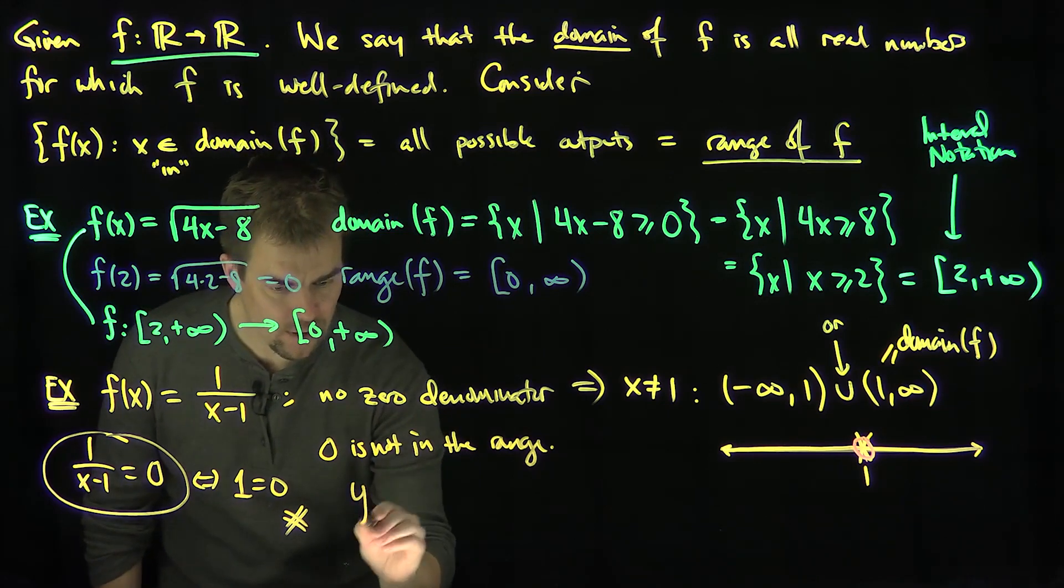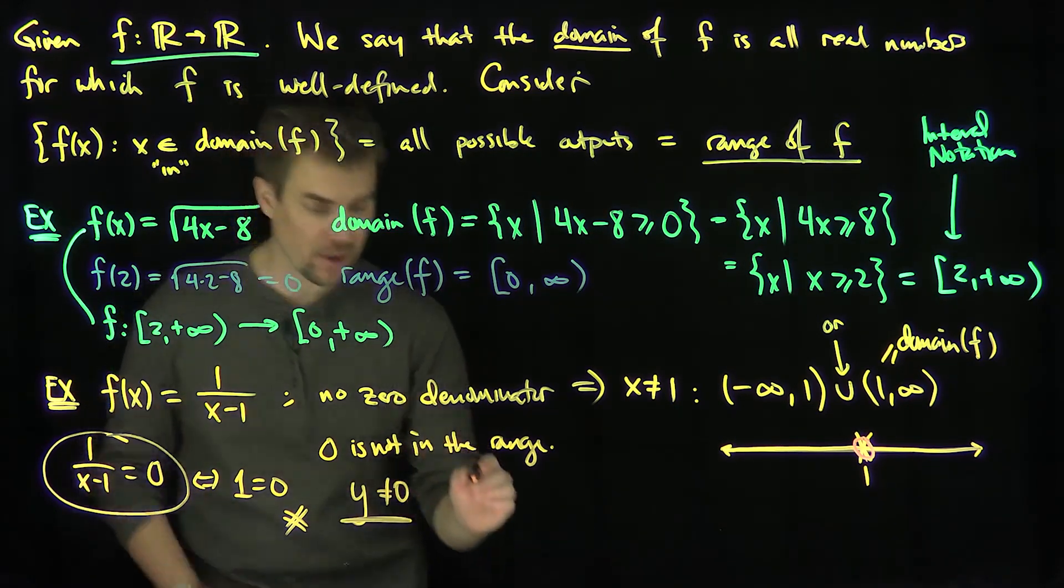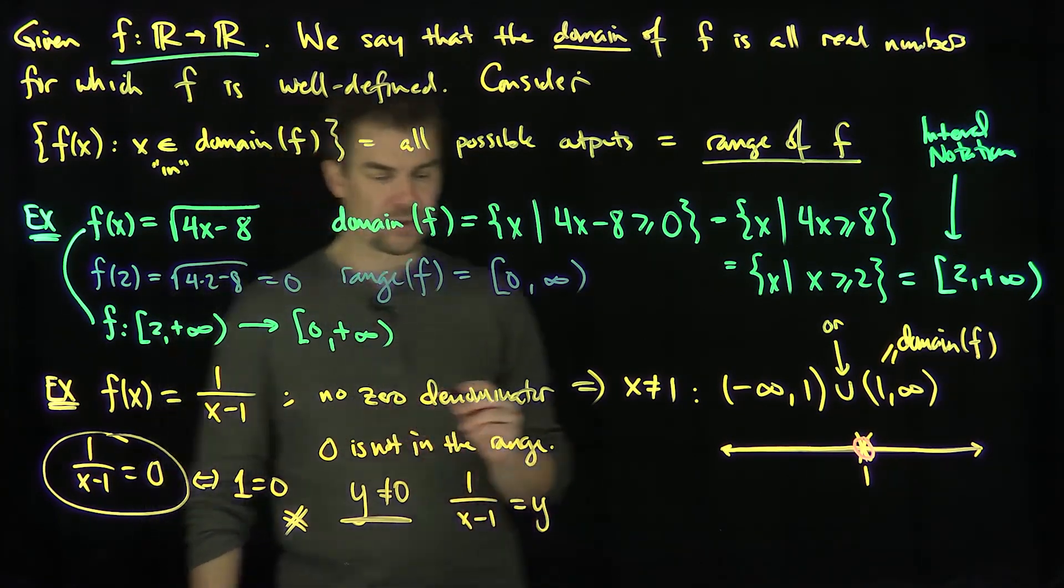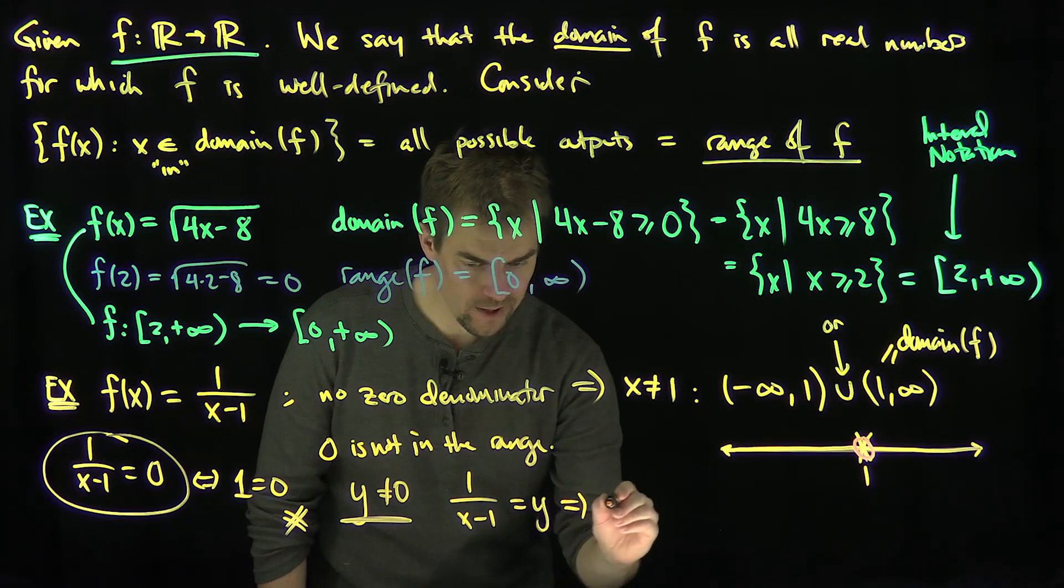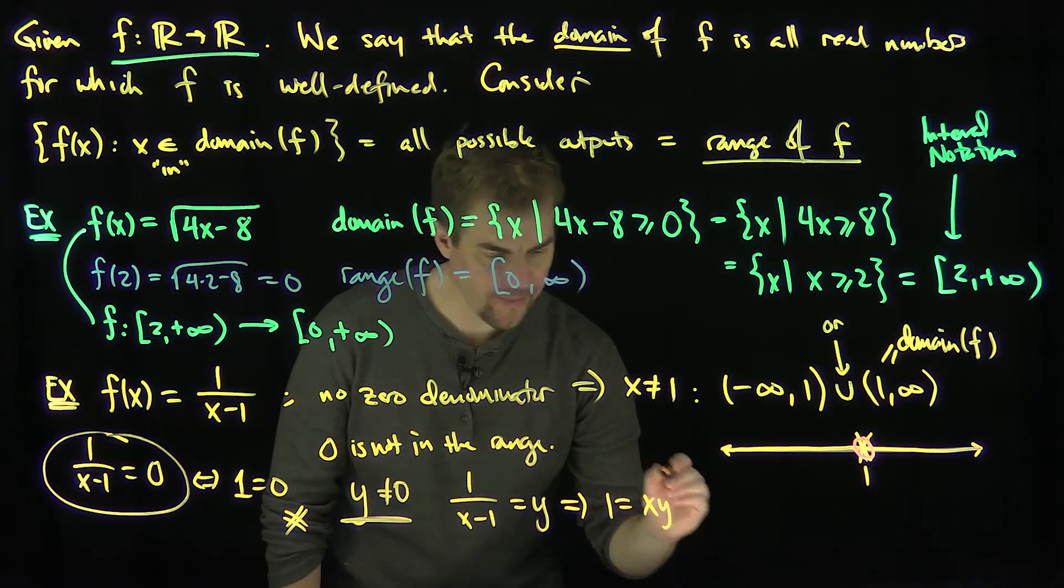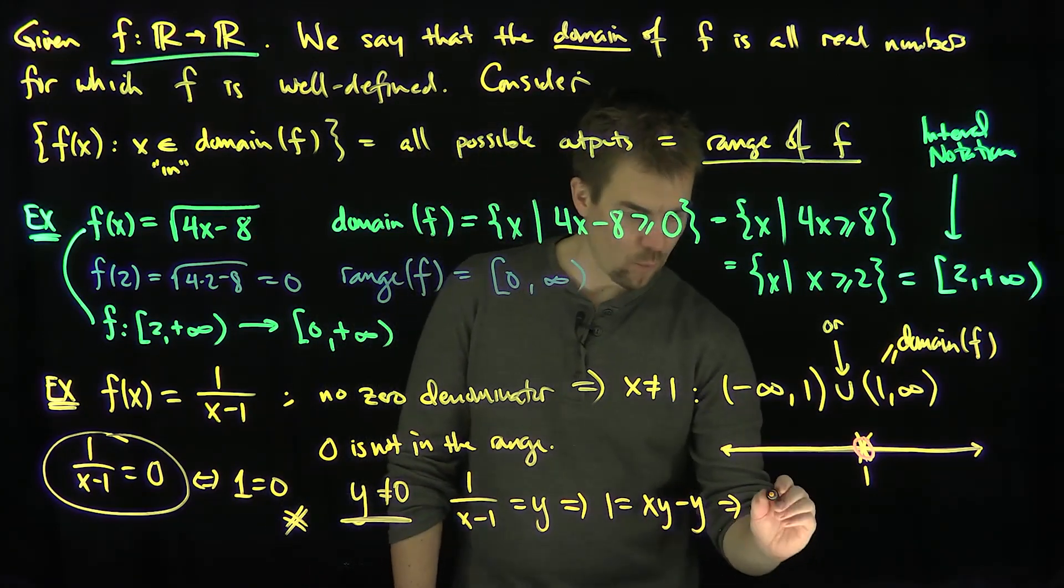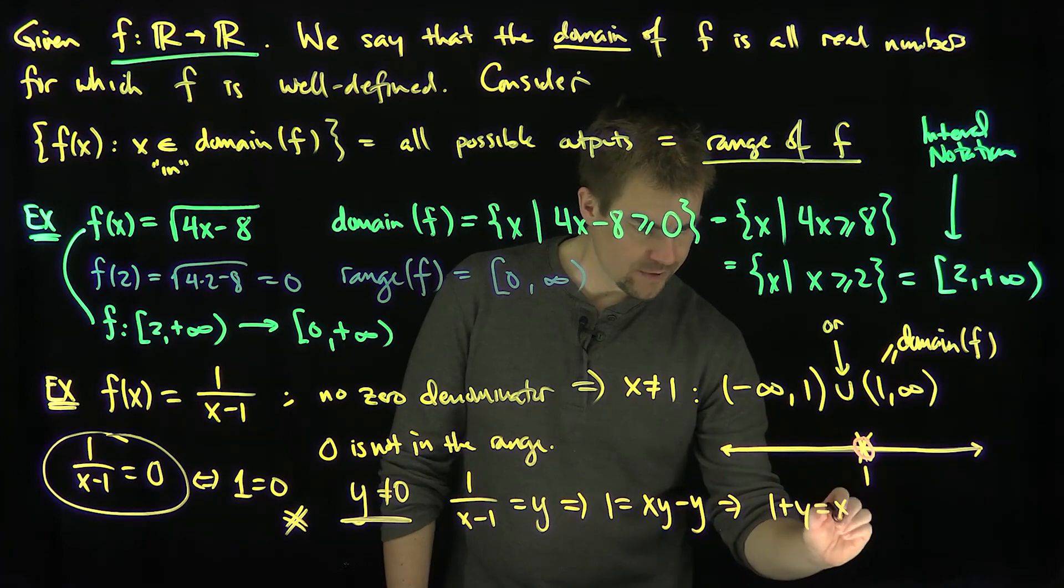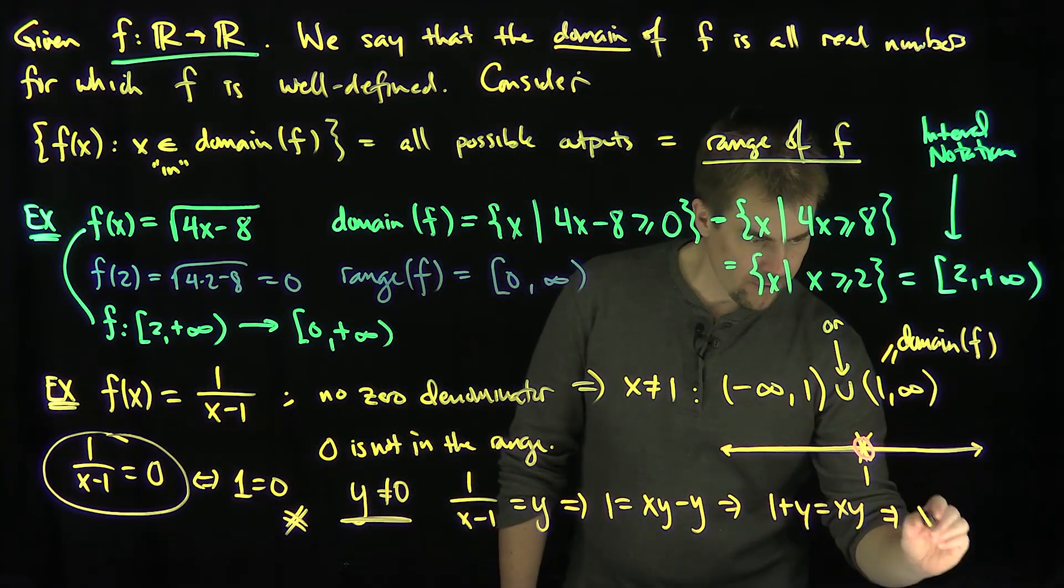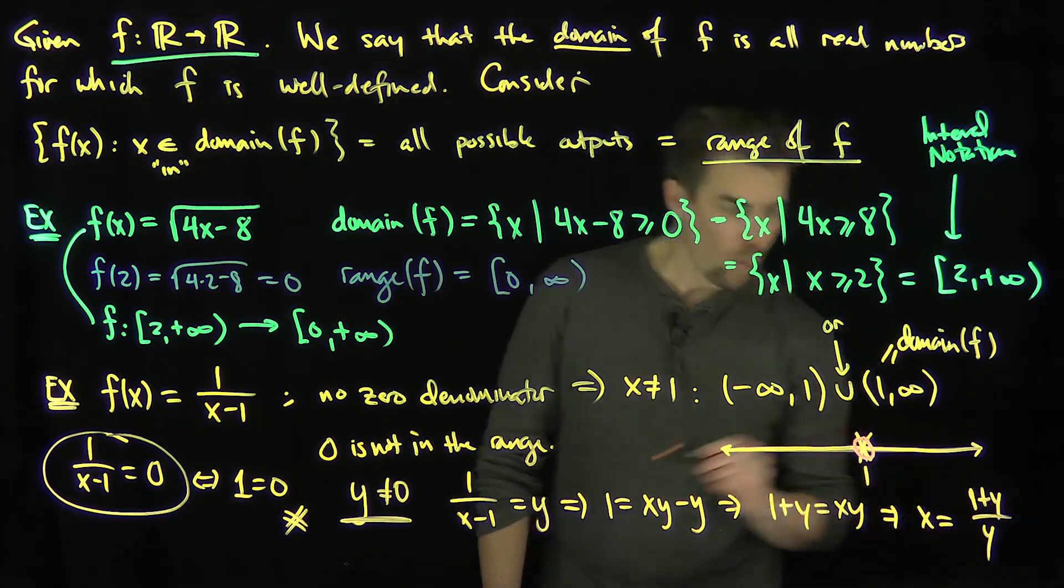But if y is not equal to 0, if y is a point that's not equal to 0, then 1 over x minus 1 equals y has a solution. What will that solution be? I'll cross multiply and get xy and then a minus y. So solving this equation, we'll have 1 plus y is equal to xy. And since y is not equal to 0, I can divide by it and conclude that the value of x that I need to choose is going to be 1 plus y over y.